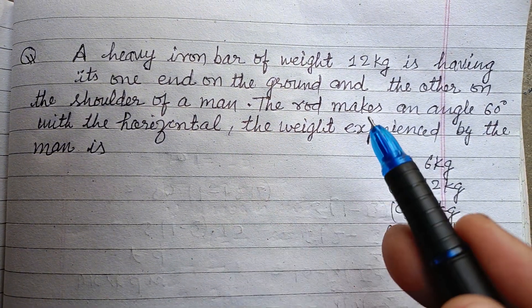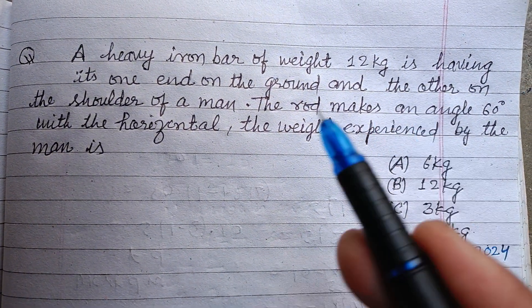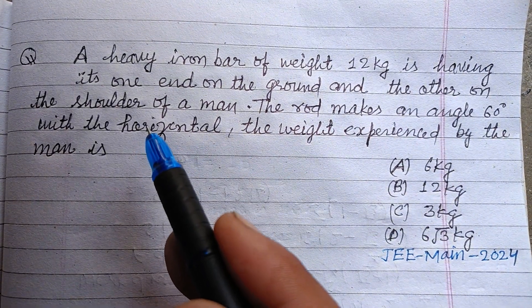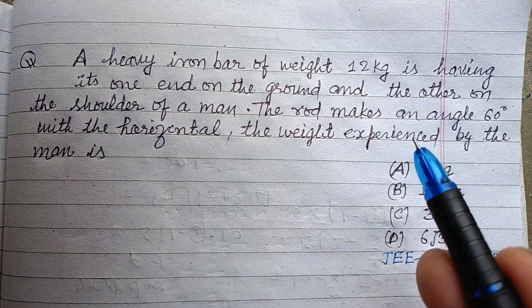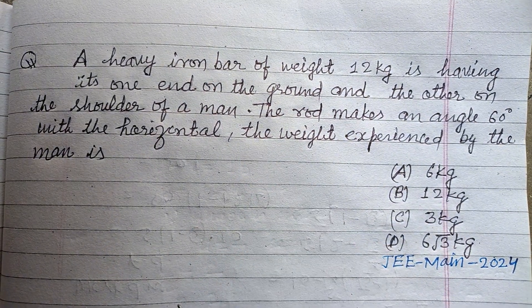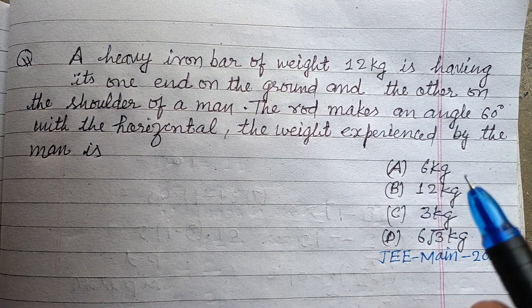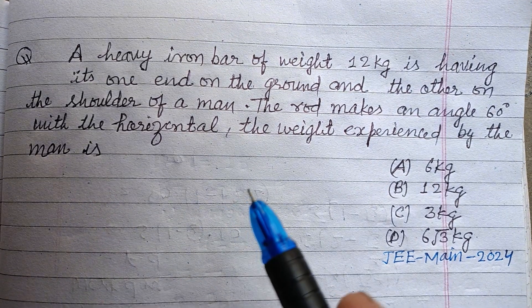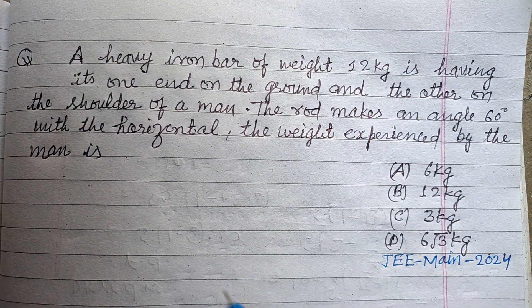This is a question from JEE Main 2024. A heavy iron bar of weight 12 kg is having its one end on the ground and the other end on the shoulder of a man. The rod makes an angle of 60 degrees with the horizontal. The weight experienced by the man is...